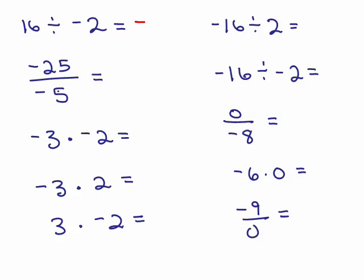Here's the division — we have two negative signs, so the answer is positive. That means you could just leave it blank; you don't have to put a plus sign. For the third one, two negative signs — positive. Next one, one negative sign, so the answer is negative. The next one, one negative sign, so the answer is negative.